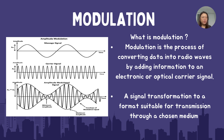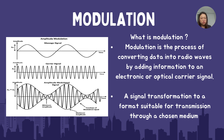Modulation is the process of converting data into a radio wave, like a sine wave, by adding information to an electronic or optical carrier signal. With that, a signal can be transformed to a format that's suitable for transmission through a chosen medium. For example, as shown in the diagram given.